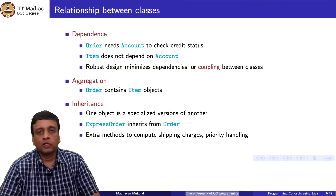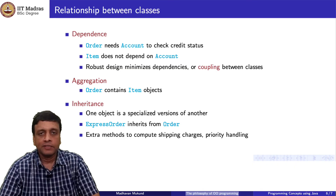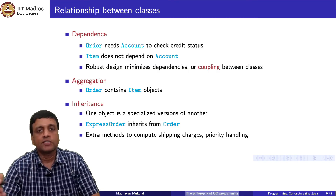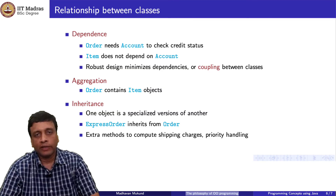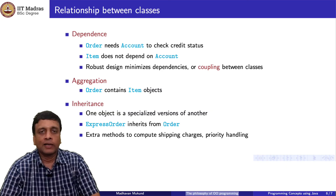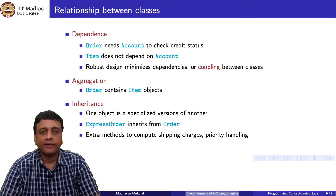The other important concept is inheritance. Object-oriented programming is richer than just abstract data types because you can have one data type that is an enhanced or specialized version of another. For instance, we have orders, but a customer might pay extra for quicker delivery — we might have an express order. An express order has all the features of a regular order — items, shipping address — but also extra information about additional charges and the delivery service to be used. This is inheritance: you take an existing class and enhance it.